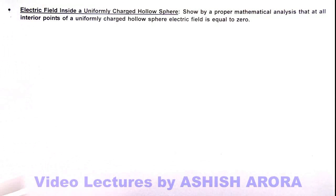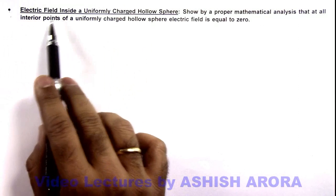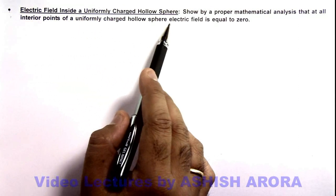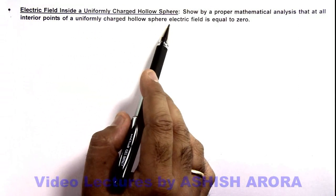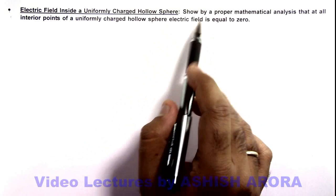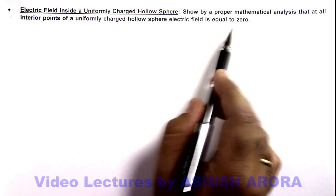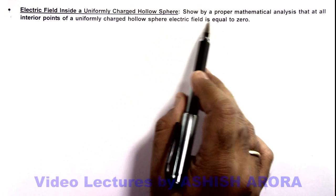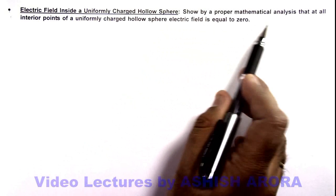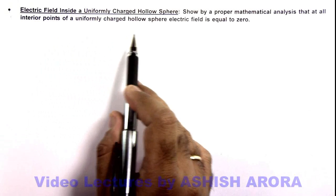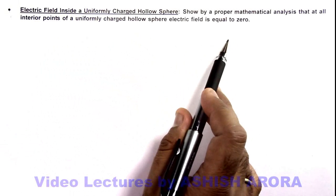Dear students, in this illustration we are going to study about the electric field inside a uniformly charged hollow sphere, which we already studied in the conceptual videos. Here we are going to analyze a situation in which we are given to show by a proper mathematical analysis that at all interior points of a uniformly charged hollow sphere, the electric field is equal to zero.